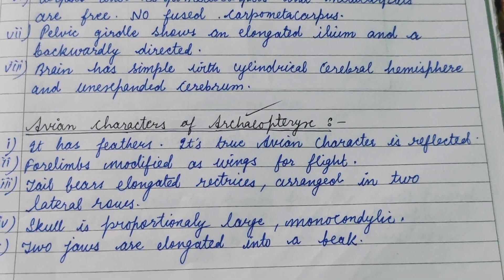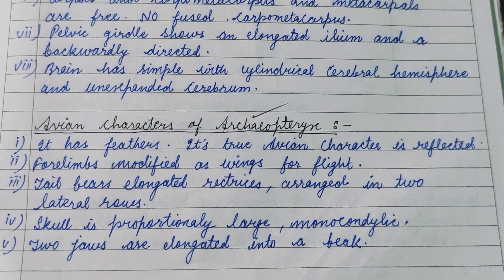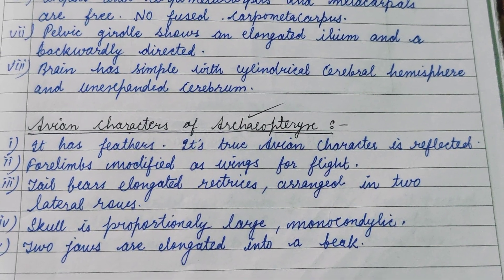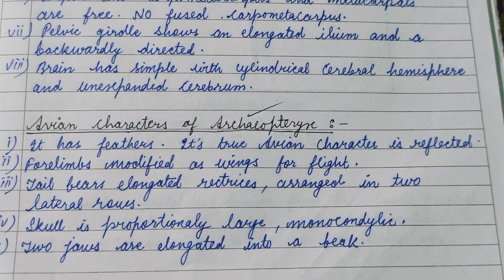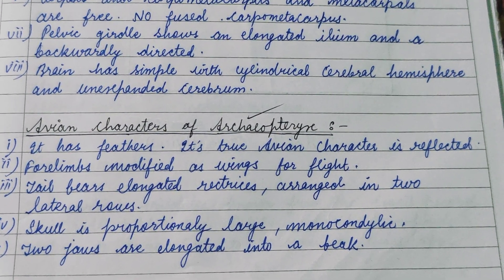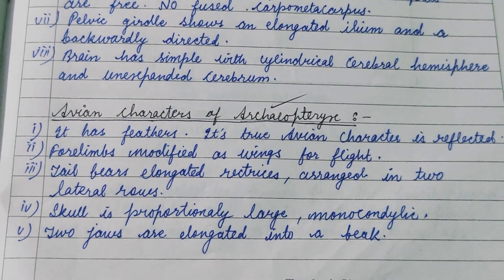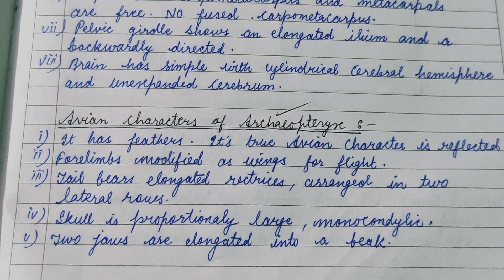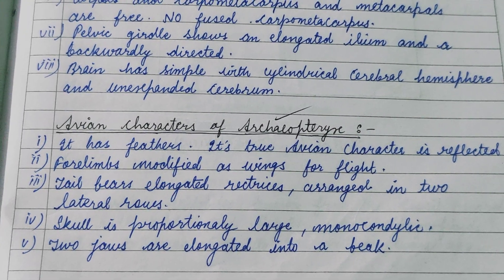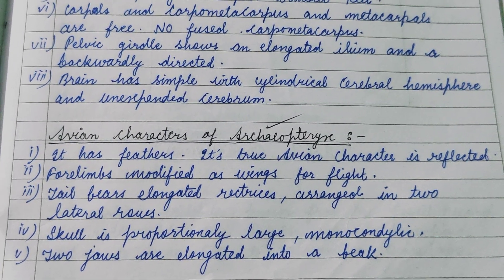The avian characters of Archaeopteryx include: it has feathers, the forelimbs are modified as wings for flight, and the tail bears elongated rectrices arranged in two lateral rows. The skull is proportionally large and monocondylic, and the two jaws are elongated into a beak.